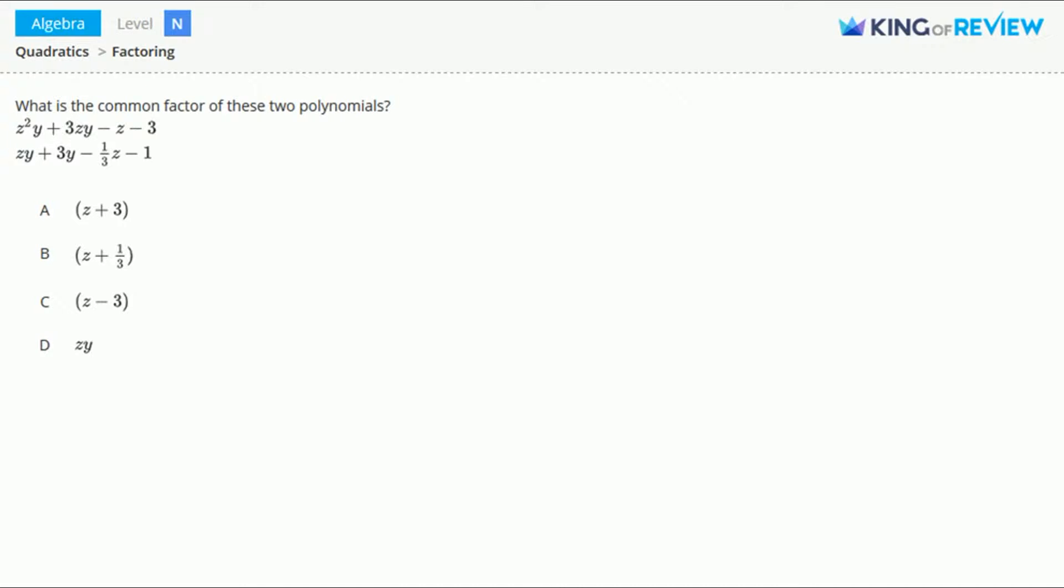Hi, this is King of Review. What is the common factor of these two polynomials? z squared y plus 3zy minus z minus 3 and zy plus 3y minus 1 third z minus 1.